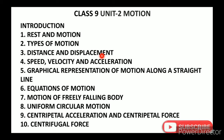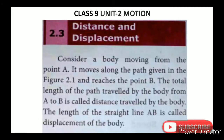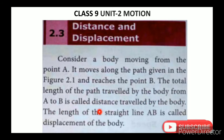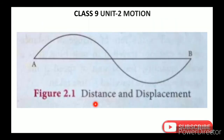The path traveled by the body from A to B is called the distance traveled by the body. The length of the straight line AB is called the displacement of the body.